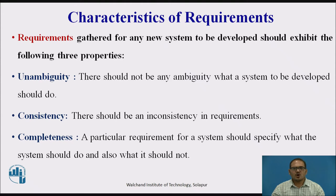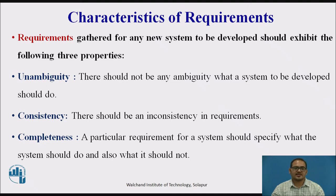There should not be any ambiguity in what a system to be developed should do. For example, consider you are developing a web application for your client. The client requires that enough number of people should be able to access the application simultaneously. What is this 'enough number of people'? That could mean 10 to you, but perhaps 100 to the client. So there is an ambiguity in the requirement statement.